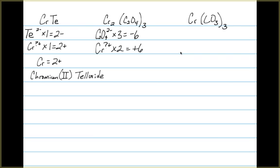The chromium, we don't know its oxidation state. But we do note that we have two of them. It has a total oxidation state of plus 6 to balance out with the negative 6.